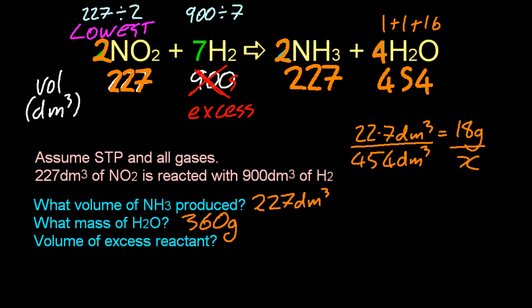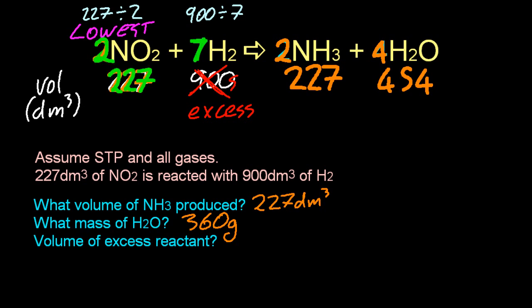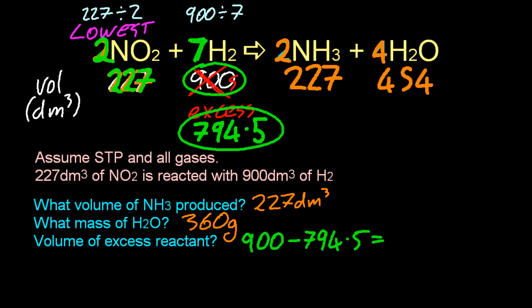The volume of excess reactant. I put in 900. That was too much. So two is to 227 as seven is to, a little more cross multiplication to get 794.5. So I put in 900, I only use 794.5. So I had 105 and a half decimeters cubed excess at the end.